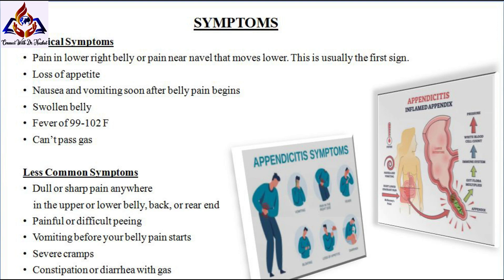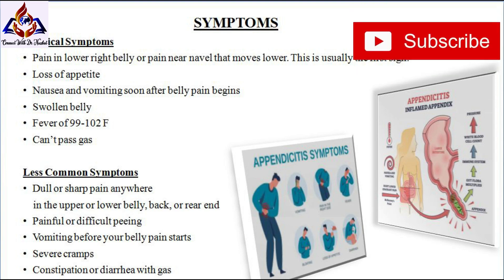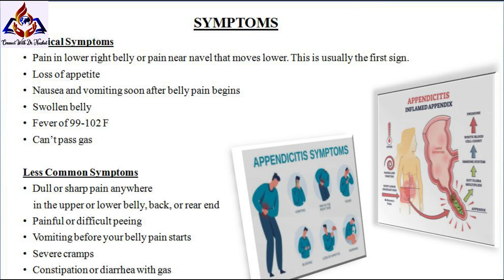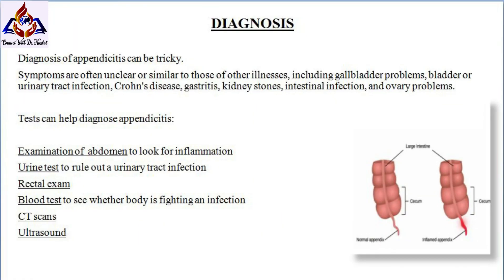Additional classical symptoms include inability to pass gas. Less common symptoms include dull or sharp pain anywhere in your upper or lower belly, back, or rear end; painful or difficult urination; vomiting before your belly pain starts; severe cramps; and constipation or diarrhea with gas.